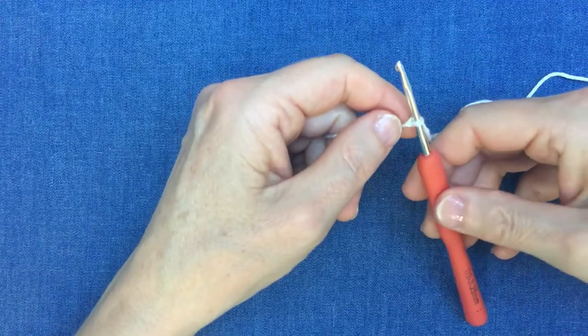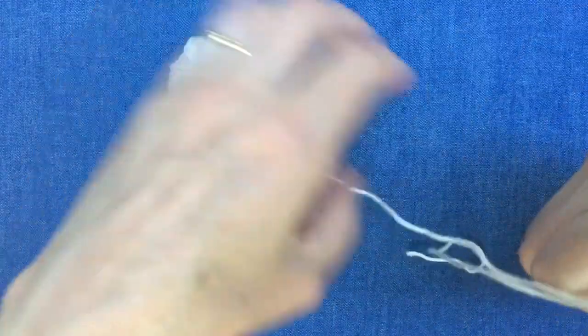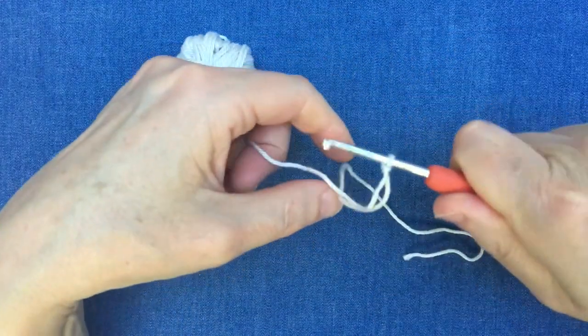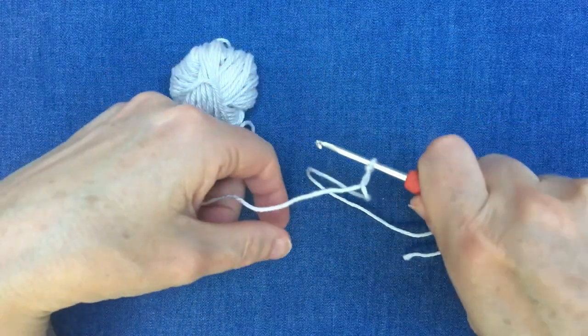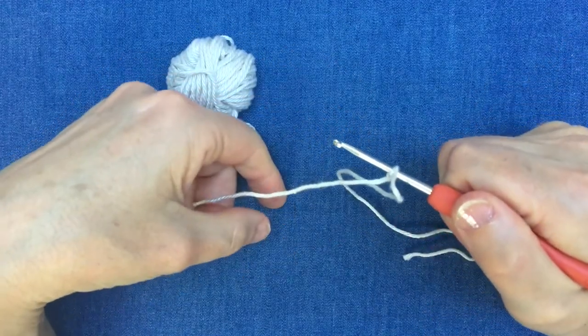Now we need to think about how to hold our yarn ready to start crocheting. In your right hand with the hook, you can hold it either like you would with a knife and fork or underneath like you would with a pen.